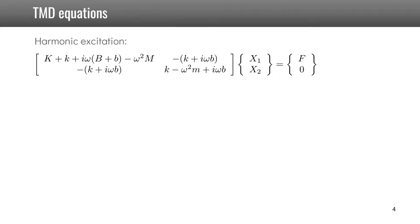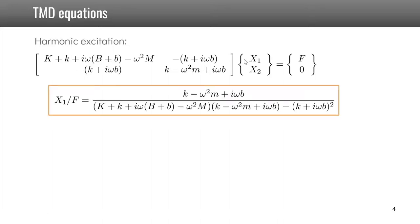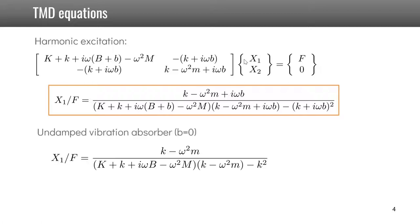If we assume harmonic excitations, this is the equation of motion. Now we want to solve for the displacement x1 of the primary system as a function of frequency. We will first look at what happens if we use an undamped vibration absorber, which means that small b is equal to zero. You see that then on the numerator you have k minus omega squared m. The idea is that we have x1 equal to zero if omega, the frequency of excitation, is equal to square root of k over m, so equal to the natural frequency of the tuned vibration absorber.